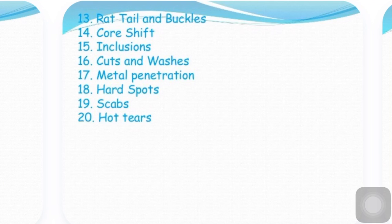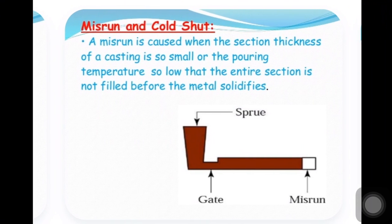Now, based on these twenty defects, we try to discuss the most important or most commonly occurring defects during casting. The first one is the misrun, or we can say cold shuts. A misrun is caused when the section thickness of the casting is so small and the pouring temperature is so low that the entire section is not filled before the metal solidifies.